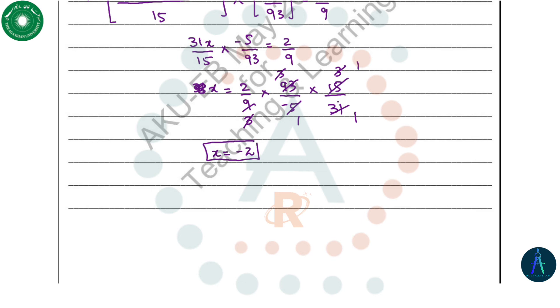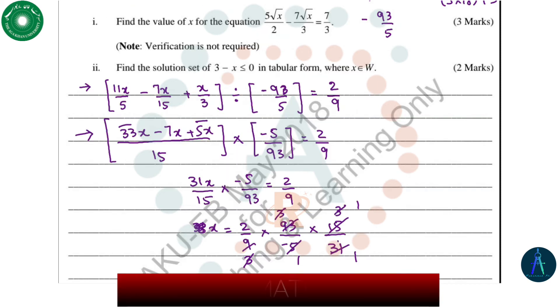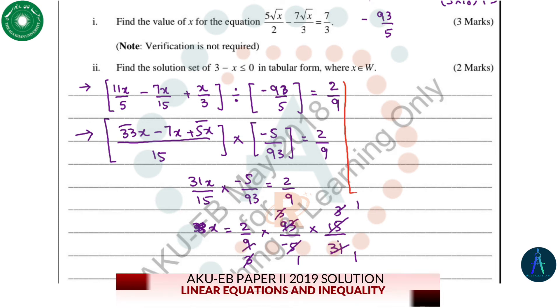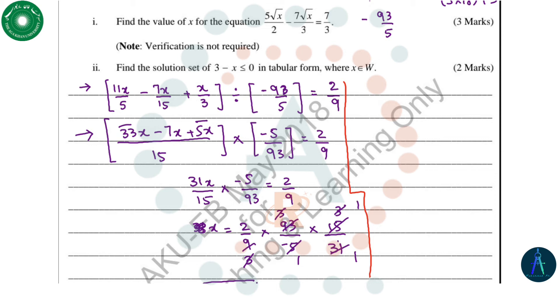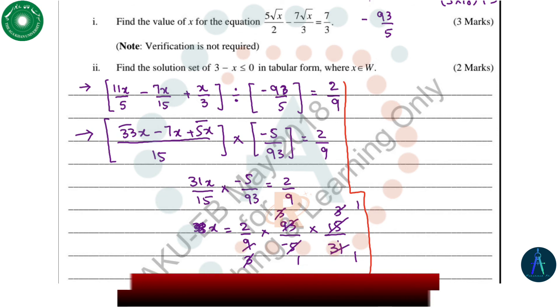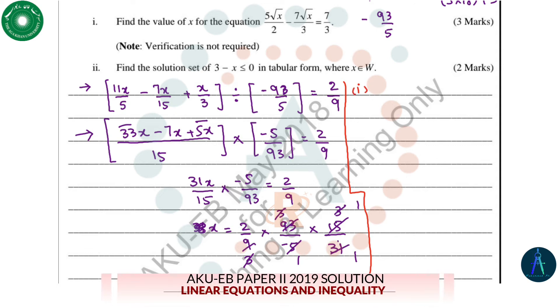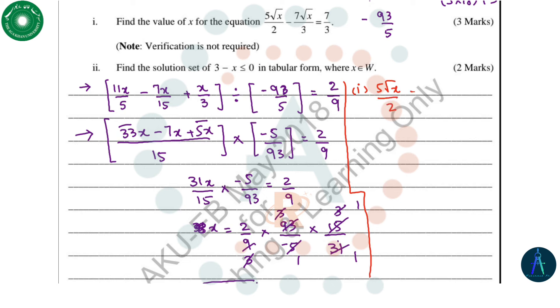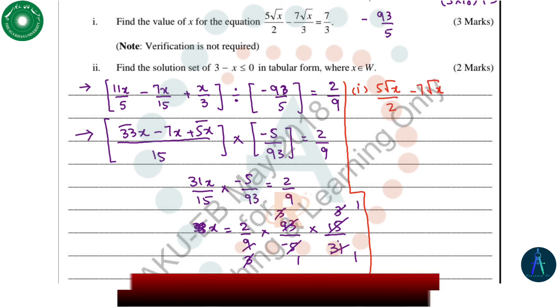Now we have the second part, Part B of this question. Let's solve Part B. In Part B we have two parts, 1 and 2. First we have a radical equation, so let's solve this radical equation. The first part is 5 root x divided by 2 minus 7 root x divided by 3 equals 7 over 3.